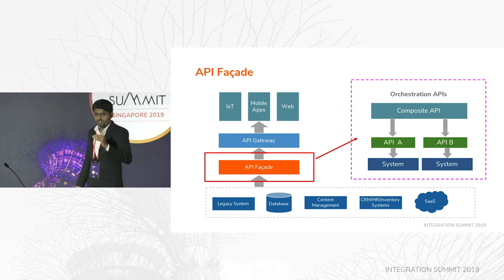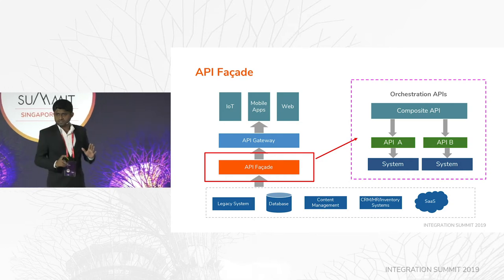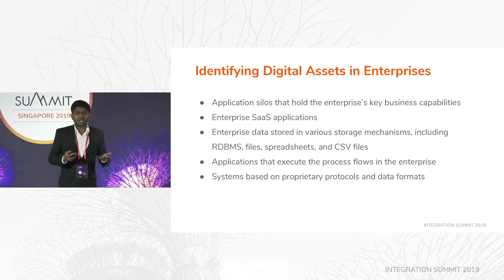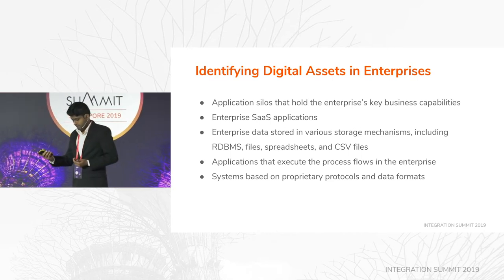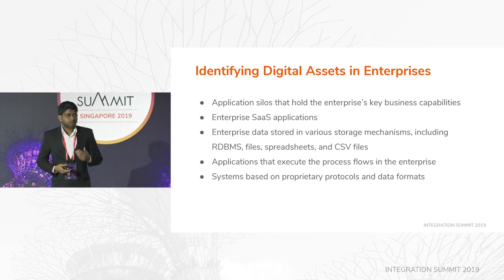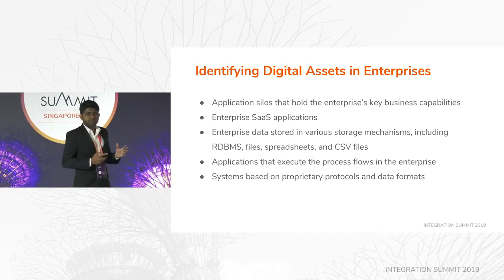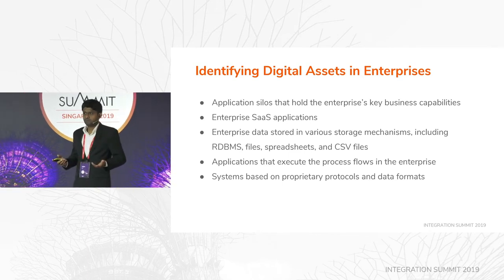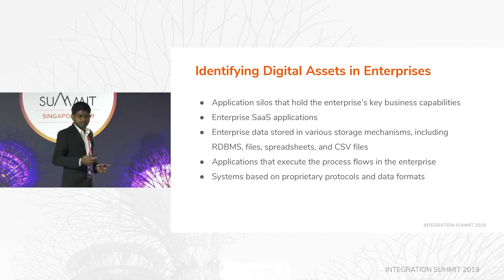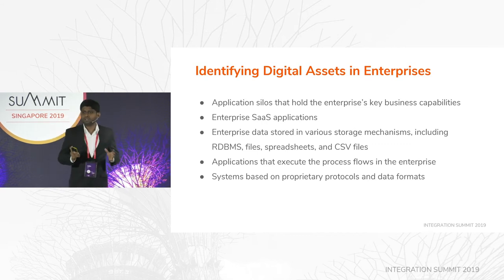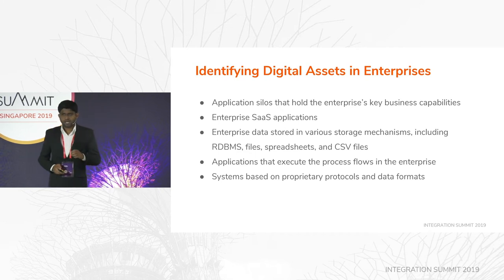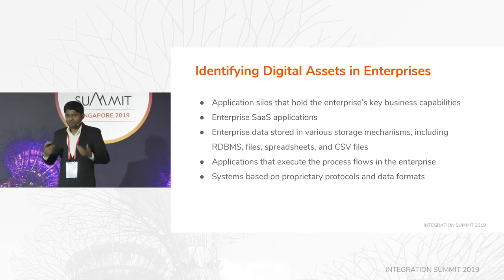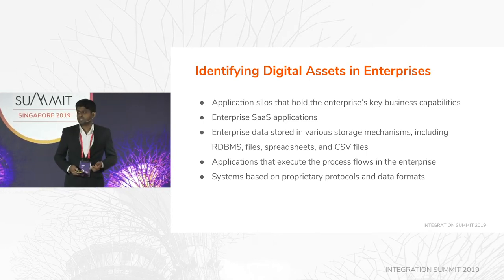When it comes to the integration and the API facade, first you have to identify the digital assets in the enterprise. Even before designing the APIs, you have to identify the digital assets. What are the application silos? In our Super City example, there will be departments that have developed software for that department only, not exposed to the outside world. Now with this online approach they have to expose it, but was it designed to be exposed? No. So we have to think about it and identify those silos, because when exposing, we might face issues. We also need to identify enterprise SaaS applications, the way we store data — databases, flat files, spreadsheets, CSVs — you have to understand your data, your business processes, management approval processes, and proprietary protocols or data formats that you have to work with.